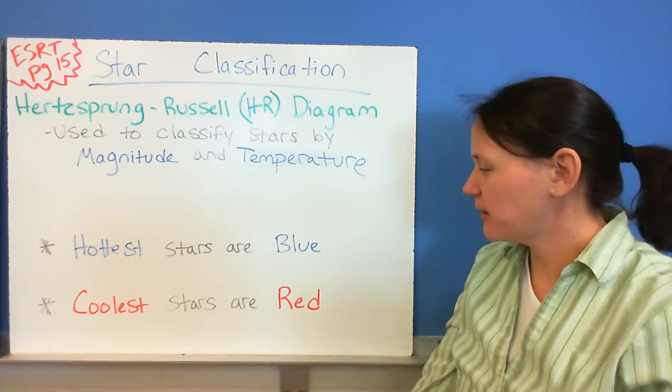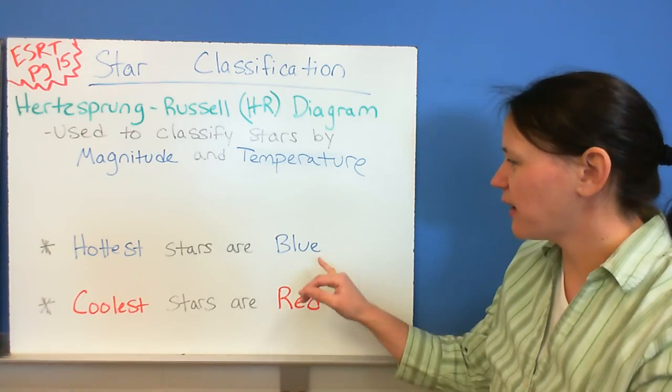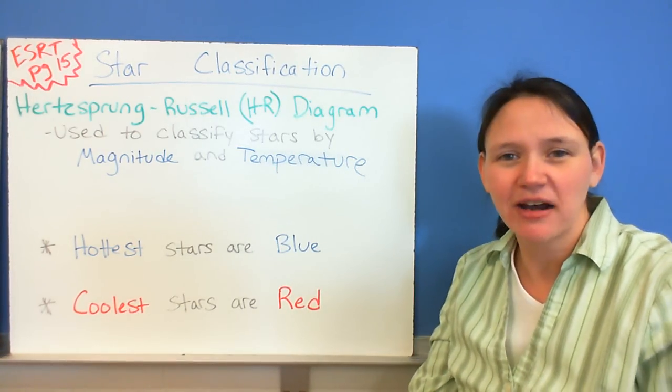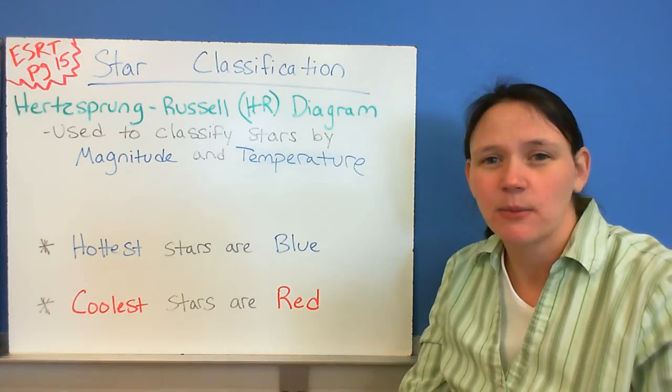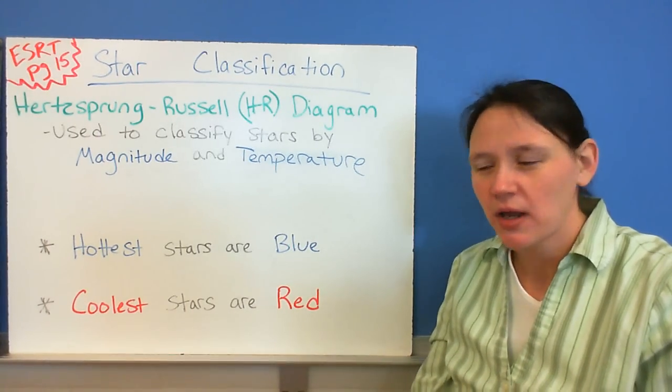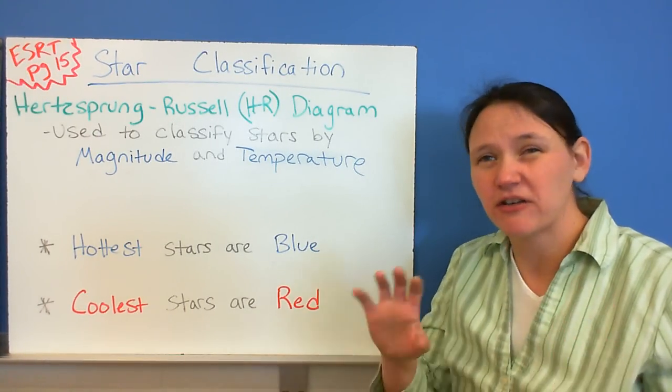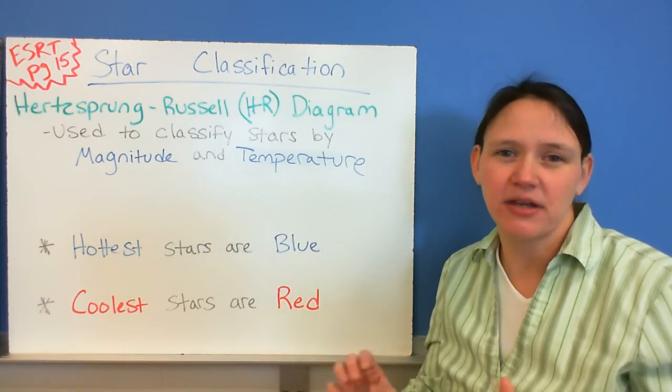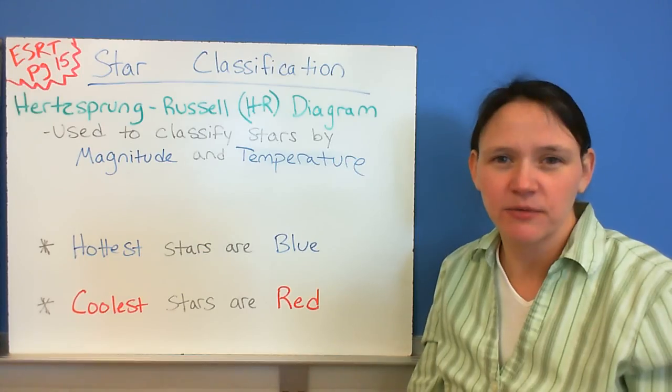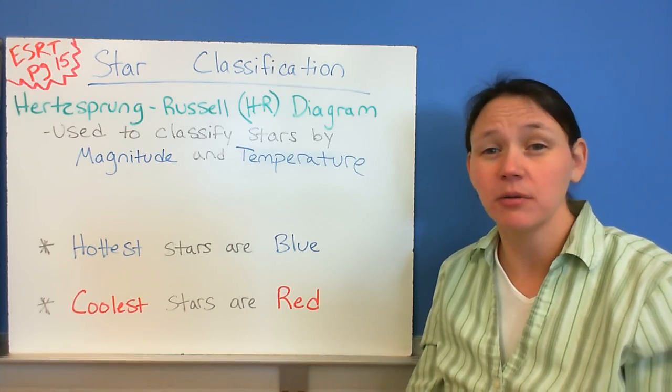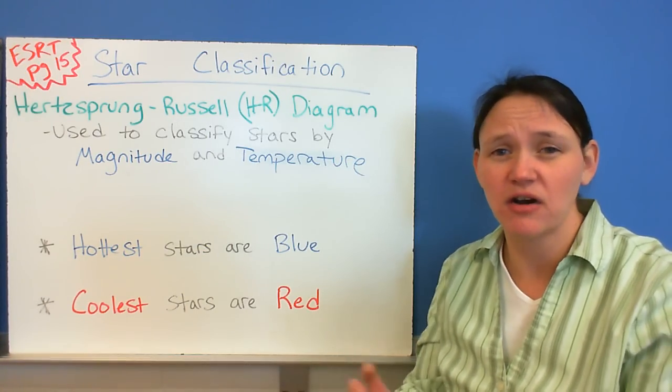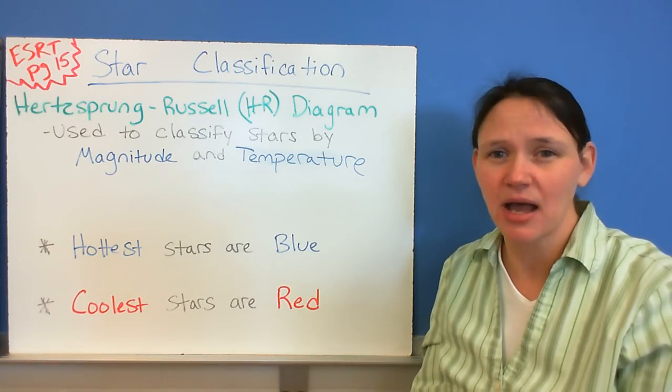One other thing we mentioned about this a minute ago, is that the stars that are actually the hottest are blue stars. And the red stars are the ones that are a little bit cooler. So when you look up in the sky, you can actually get an idea of the relative temperature of all of the stars. So the blue and white ones are much hotter than the red and orange stars that you see in the sky.